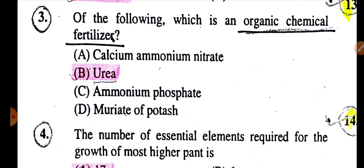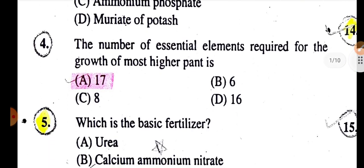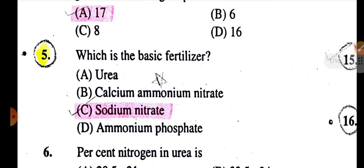Of the following, which is an organic chemical fertilizer is urea. The number of essential elements required for growth of most higher plants is 17. Which is the basic fertilizer: sodium nitrate.